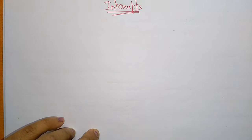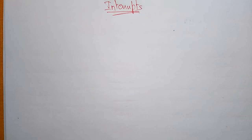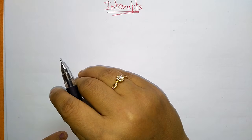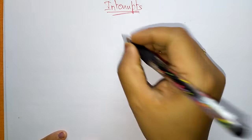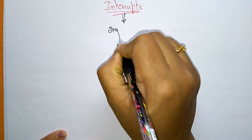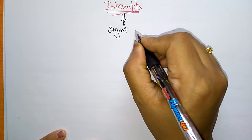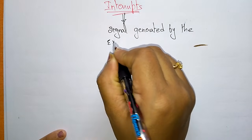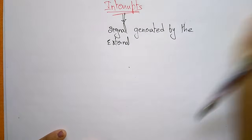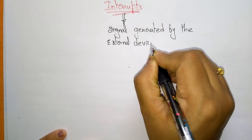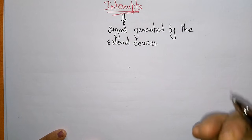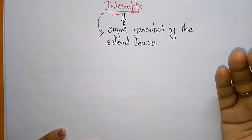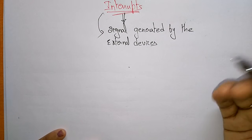Coming to the next topic in computer organization and architecture: interrupts. An interrupt is nothing but a signal generated by external devices to request the microprocessor to perform some task. The interrupt signal is asking the microprocessor to perform some action, so it is a signal given to the microprocessor.